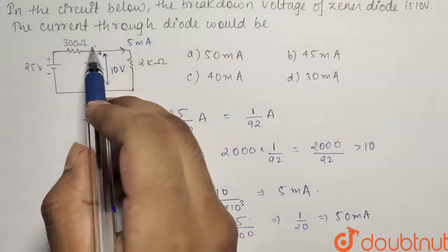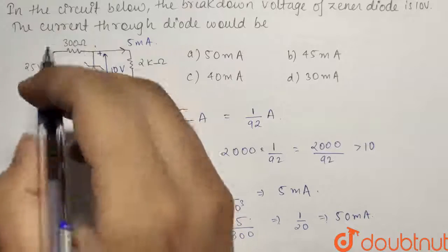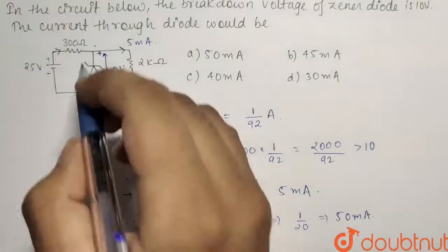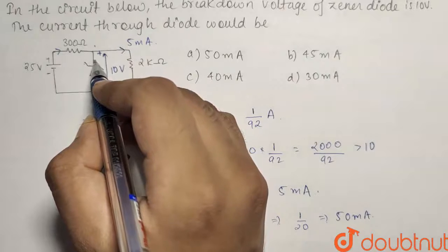Now here 25 volts is at a higher potential than 10 volts. So the current will be flowing in this direction. So the current in the Zener will be equals to nothing but...